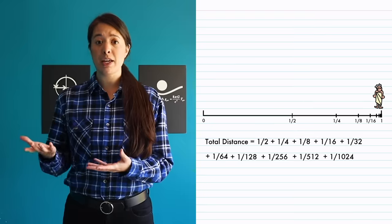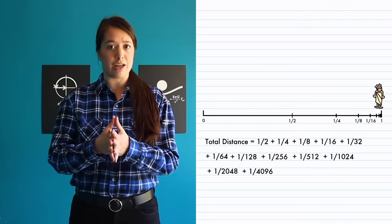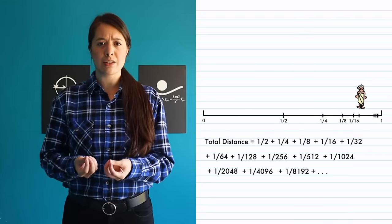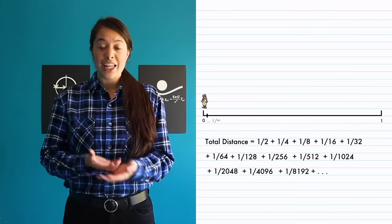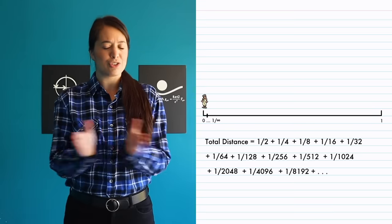And if a sum gets bigger every time you add on a fraction and you have an infinite amount of numbers to add on, shouldn't the total distance get infinitely large? And if a distance is infinitely large, surely you can never traverse it.